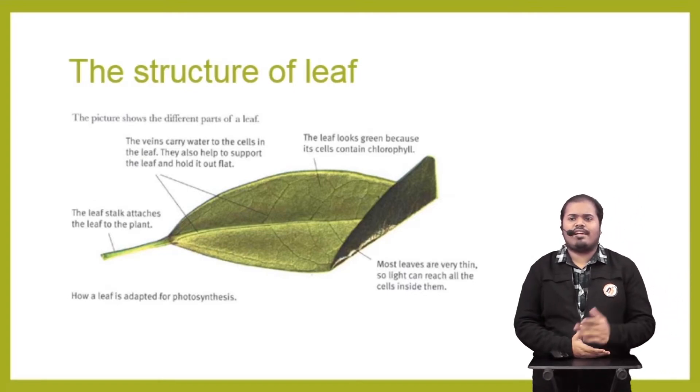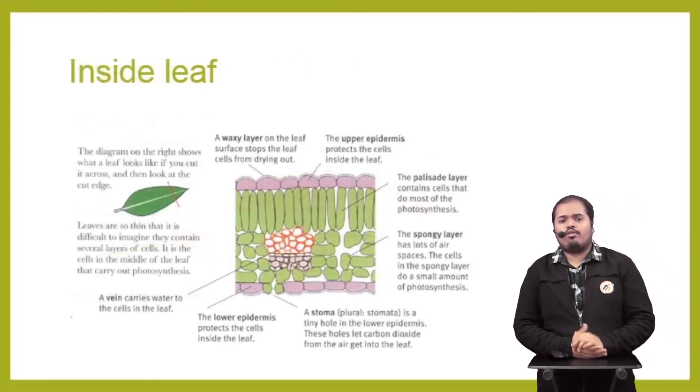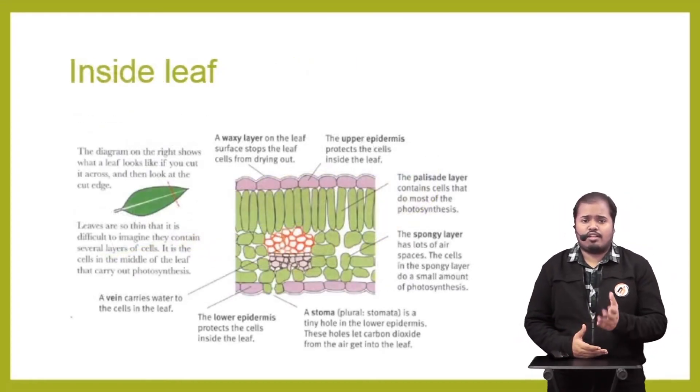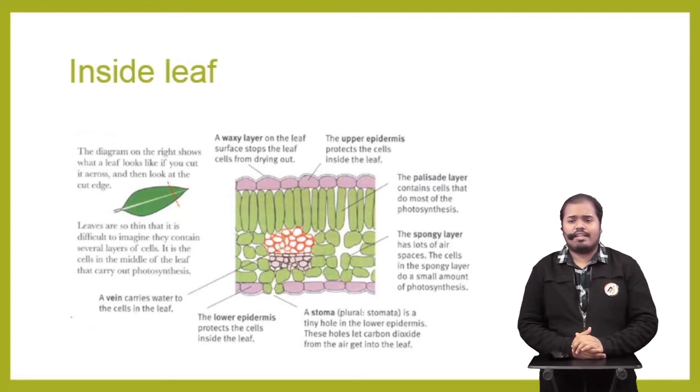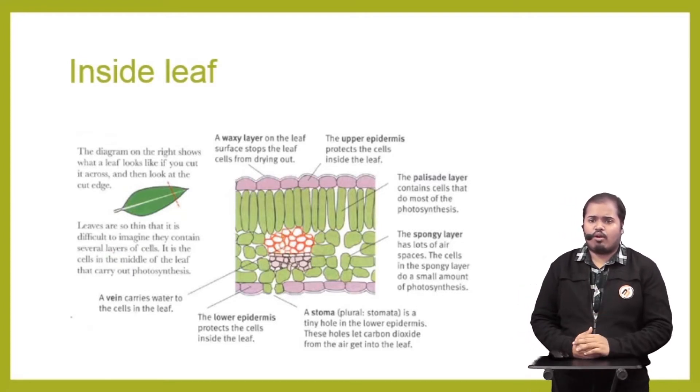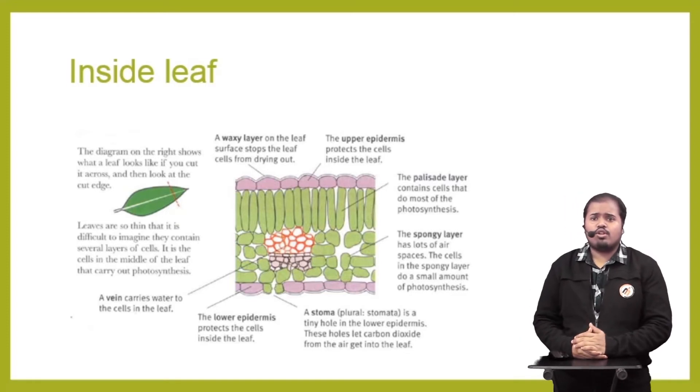Now we are looking at the inside of the leaf, in other words, a cross-section of a leaf, so we can see the layers of cells. The upper and bottom layers found in the leaf are called upper epidermis and lower epidermis. The upper epidermis is coated by a waxy layer to avoid evaporation.